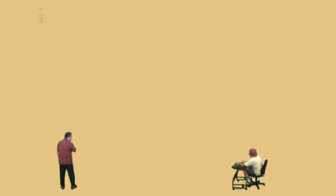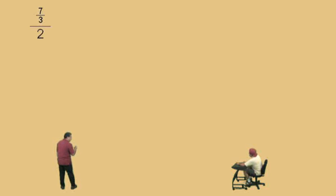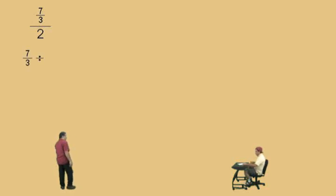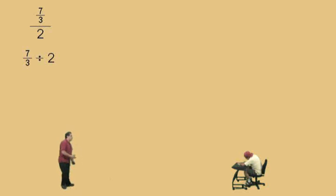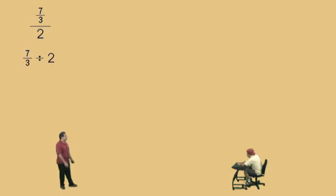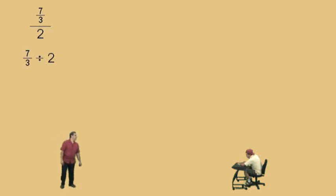Charlie, this time we're going to take 7/3 and we're going to divide it by 2. If we write it with a division symbol, it's 7/3 divided by 2. Charlie, what does it mean to divide by 2? Cut it in half — to take half of it, right?